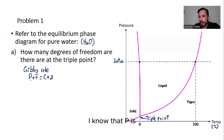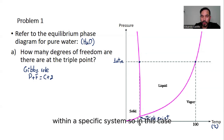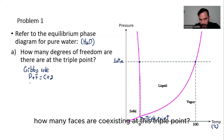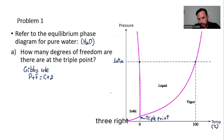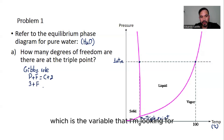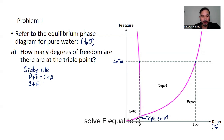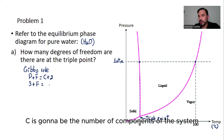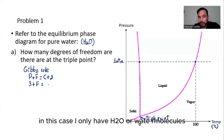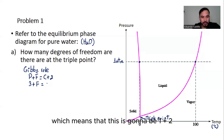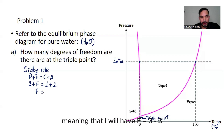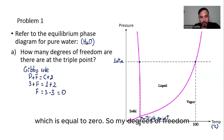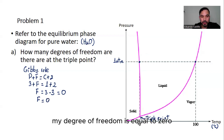Gibbs' rule states that P plus F equals C plus 2, where P is the number of phases that coexist within a specific system. At the triple point, P equals 3 — solid, liquid, and vapor. C is the number of components, which is 1 (only H₂O). So: 3 + F = 1 + 2, giving F = 3 − 3 = 0. My degrees of freedom equal 0.